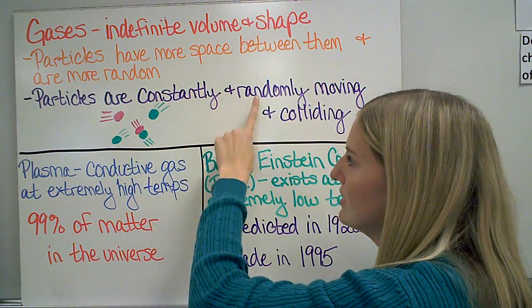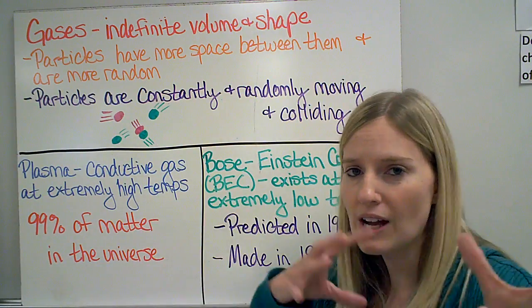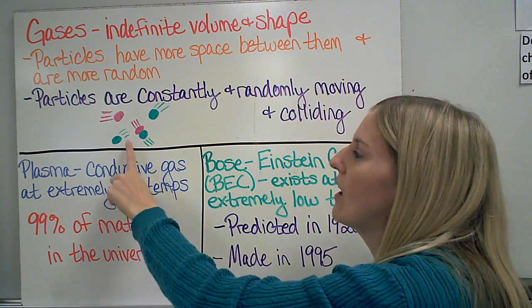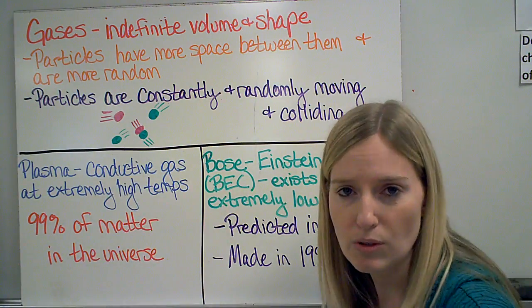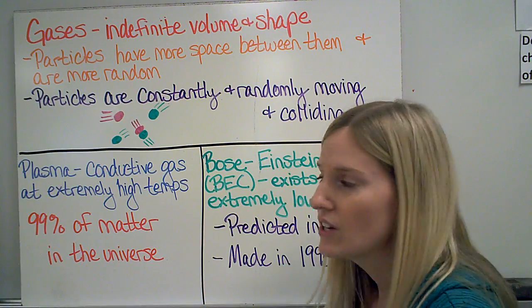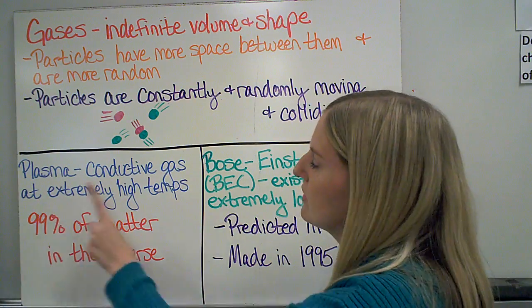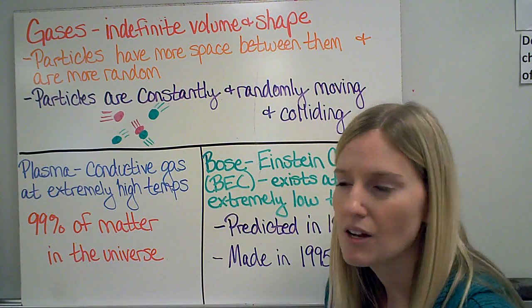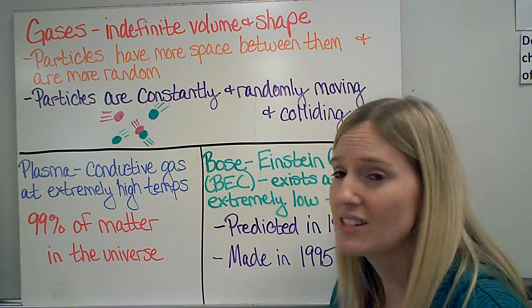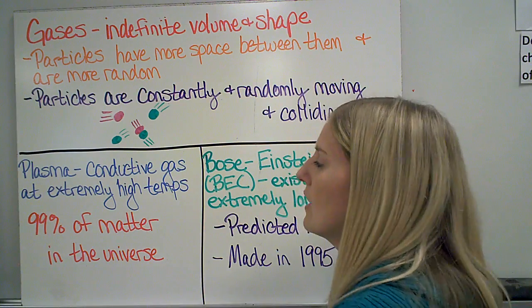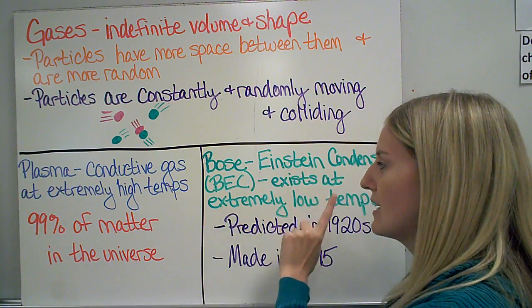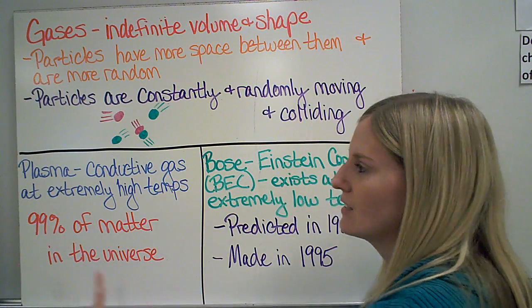The particles are constantly moving around and they are colliding with one another. There are two other states of matter that exist, just not naturally here on Earth. And they are plasma and Bose-Einstein condensates.